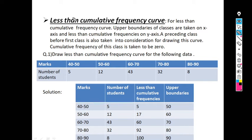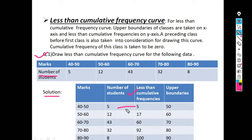The question is: draw the less than cumulative frequency curve for the following data — marks and number of students. To find the less than cumulative frequency, it is obtained from frequency, where frequency is the number of students. The first value is taken as it is: 5. Then addition of the first 2 gives 17, addition of first 3 gives 60, addition of first 4 gives 92, and addition of first 5 gives 100.